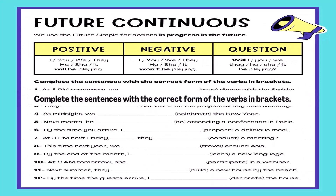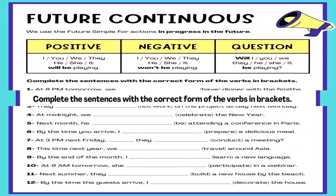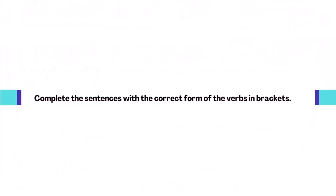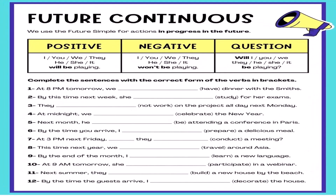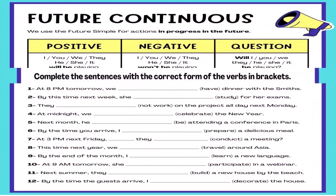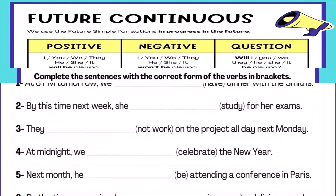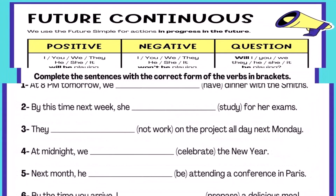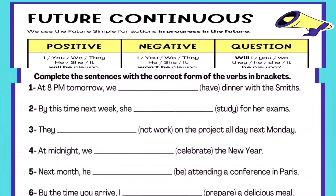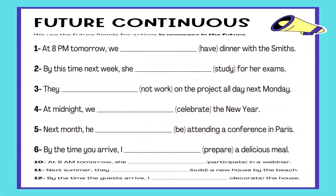Complete the sentences with the correct form of the verbs in brackets. Number one: At 8pm tomorrow, we ___ (have) dinner with the Smiths.